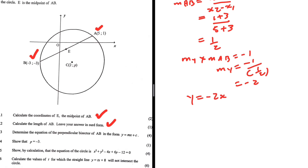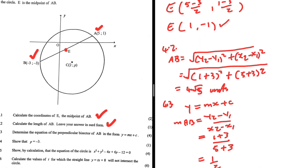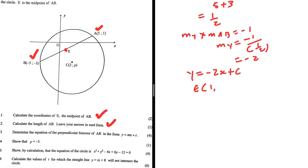So the equation is Y equals minus 2X plus C. If this is indeed a perpendicular bisector, then it should touch line AB at E, because that's the midpoint of AB. So the line must touch AB at E. We can substitute E to find the value of C. E is (1, -1), so we have minus 1 equals minus 2 multiplied by 1 plus C.